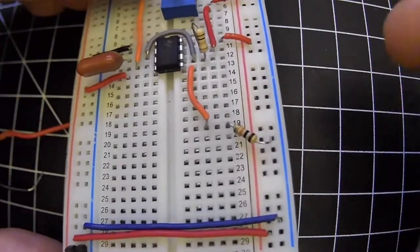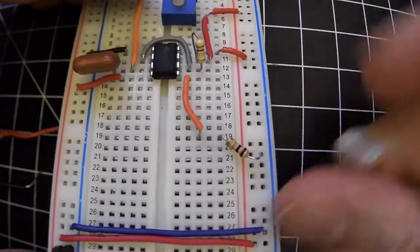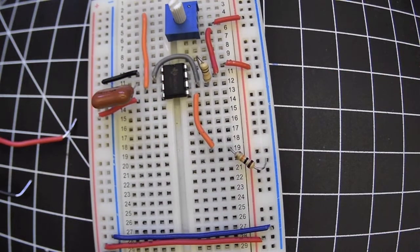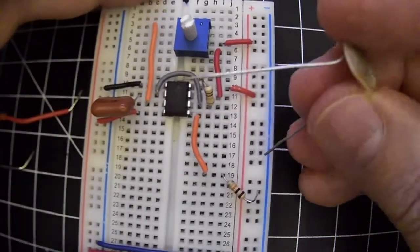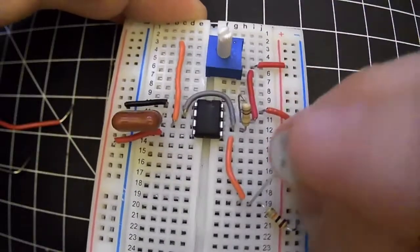So to make my voltage divider with a photoresistor, I've hooked up a fixed resistor, a 10k fixed resistor between ground and my voltage division point. And now I'm going to connect a photoresistor between plus and that same voltage division point.